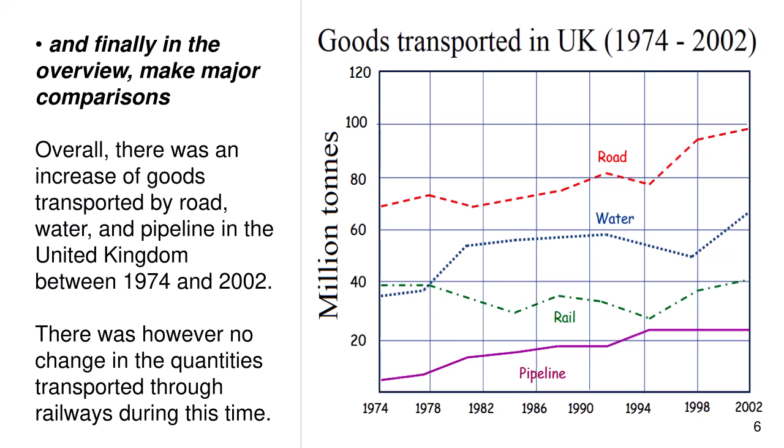And finally, in the overview, make major comparisons. Overall, there was an increase of goods transported by road, water and pipeline in the UK between 1974 and the year 2002. There was, however, no change in the quantities transported through railways during this time.